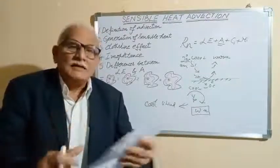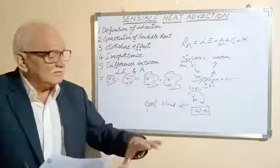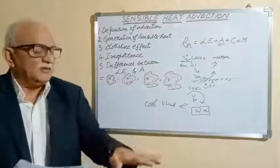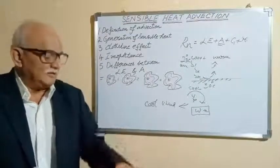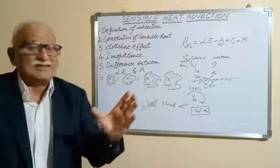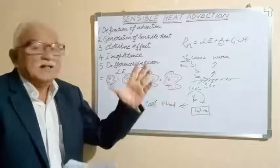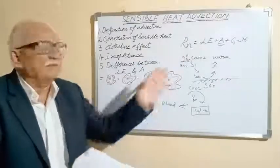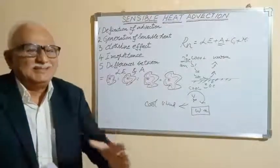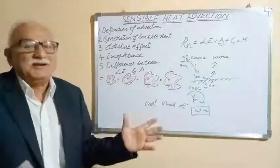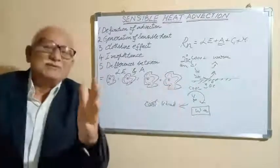The clothesline effect typifies the changes because of agronomic treatments like crop density or different heights of varieties. From the windward side to the leeward side, if you take small areas, they typify the clothesline effect — the difference in sensible heat is found. On the windward side it may be 30, and on the leeward side it may be 20.